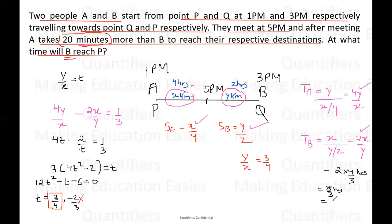So that means B is going to take 2 hours 40 minutes after 5 PM. So when will B reach P? B will reach P 2 hours 40 minutes after 5 PM. So answer will be 5 PM plus 2 hours 40 minutes, that is 7:40 PM. 7:40 PM is the correct answer. This is a very good question. I hope this question is clear to everyone. Thank you everyone.